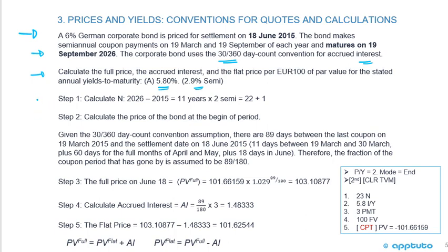Step one: calculate N. That's 2026 minus 2015 = 11 years, times 2 = 22, plus 1. So N equals 23 periods.